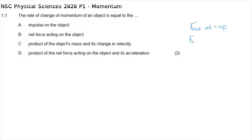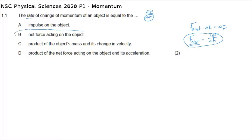Or it can be written as F-net equals delta p over delta t. This question asks for the rate of change of momentum, which refers to delta p over delta t. The rate of anything is always divided by the amount of time, so we are dealing with the second formula, which says the rate of change of momentum equals the net force — making option B the correct answer to question 1.1.